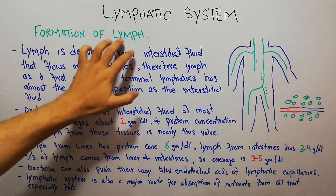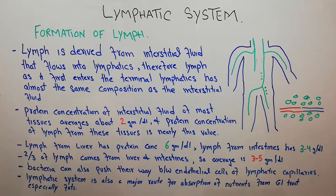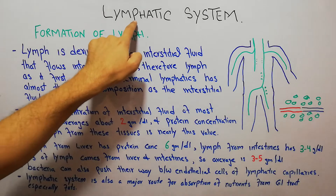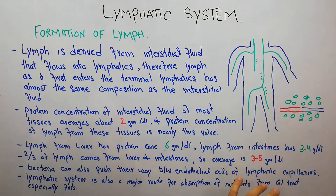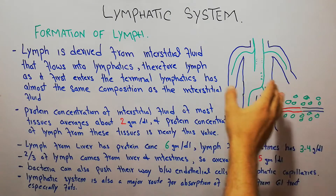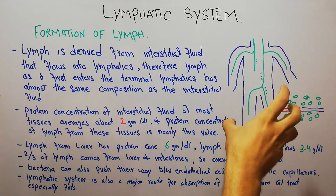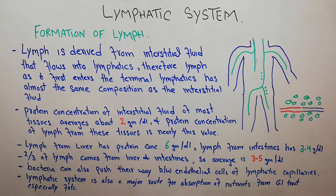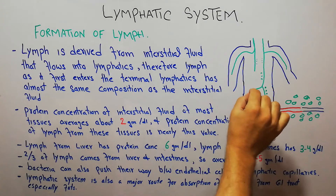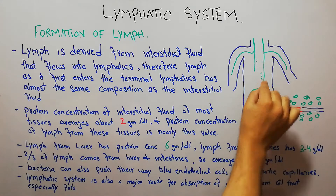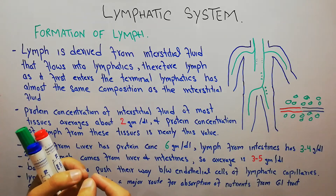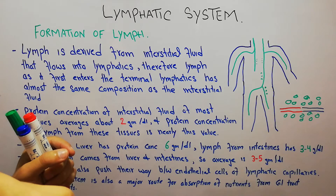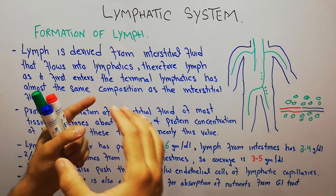Today we are going to talk about the formation of lymph. We have started our new series of lectures about the lymphatic system and we have discussed the lymphatic channels in the human body — how they are formed, how they collect lymph from the human body, and how they empty the lymph into the blood vessels. We have also discussed the structure of the lymphatic capillaries and their permeability for large particles.